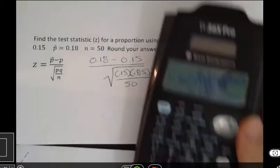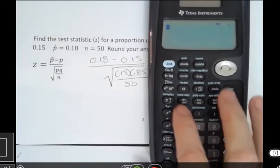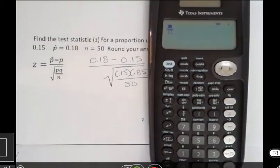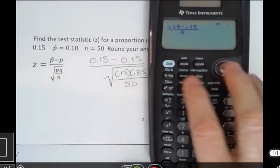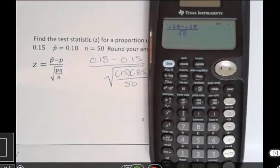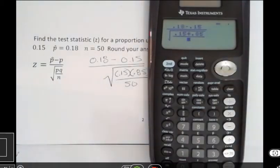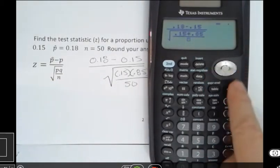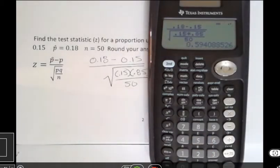So I'm going to put that into my calculator this way. I'm going to start off by putting a fraction, because overall it is a fraction. I've got 0.18 minus 0.15 on the top. Down below I have a square root and I have a fraction inside that. 0.15 times 0.85 on the top, and then I'm using my keys to go down or left or right. And then I have 50 and I hit enter. And now I have 0.5940885, whatever that is.